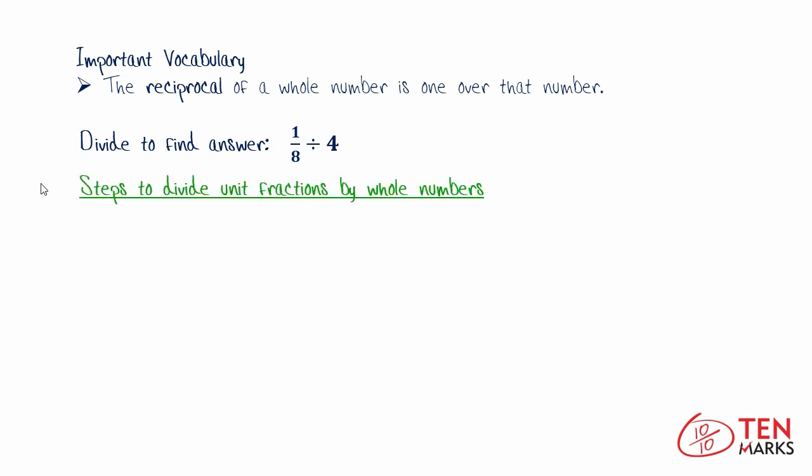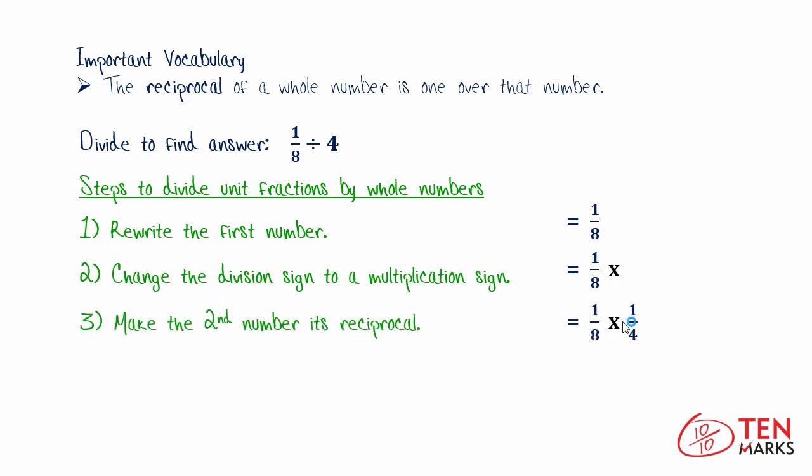So the steps to divide unit fractions by whole numbers include: Number 1, rewrite the first number, so you're going to rewrite 1/8. Number 2, change the division sign to a multiplication sign. Number 3, make the second number its reciprocal. As you saw above, 4 turns into 1/4. And finally, solve the multiplication problem. So 1/8 times 1/4 equals 1/32.